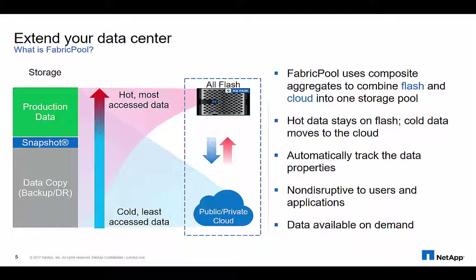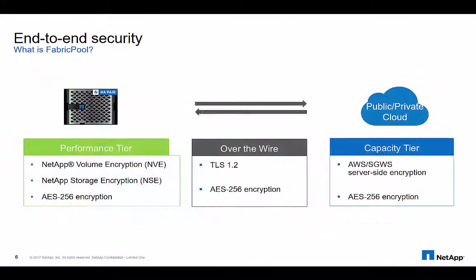The data at rest is moved to the capacity tier in secure channels via TLS 1.2 or AES-256 encryption to keep your data secure throughout its flight.